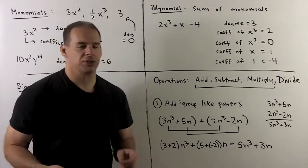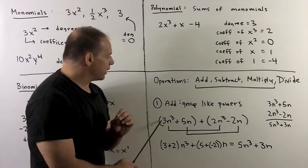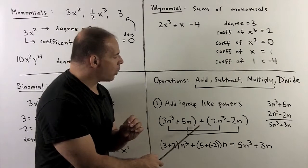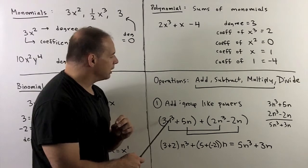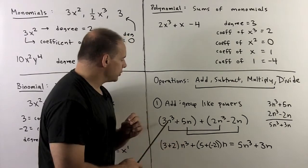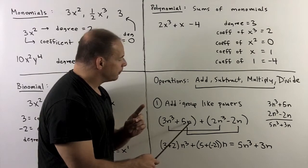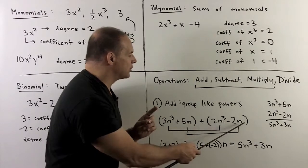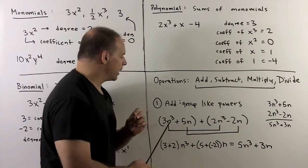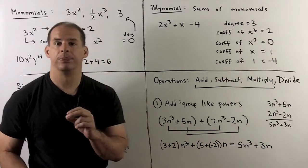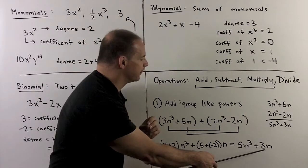For addition, if I want to add two polynomials together, we just want to group together the like exponents. For instance, if I took 3n cubed plus 5n and added that quantity to 2n cubed minus 2n, I look at the first term — I have an n cubed — then look for n cubed terms in the second polynomial and add: 3 plus 2. Then I have 5n, and I look for n terms: there's a minus 2n, so I put those together. We add coefficients, giving 5n cubed plus 3n.